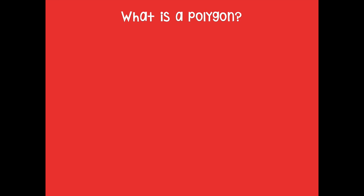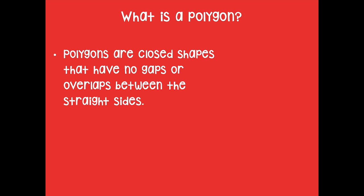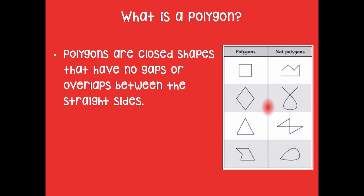What is a polygon? Polygons are closed shapes that have no gaps or overlaps between the straight sides. On the left-hand side are polygons — they're all closed, no openings, no gaps, and nothing overlaps. On the right-hand side are shapes that are not polygons: one has a gap and isn't closed, another does not have straight sides and looks like a loop of string. Those are not polygons because they don't have straight sides, are not closed, and some overlap.